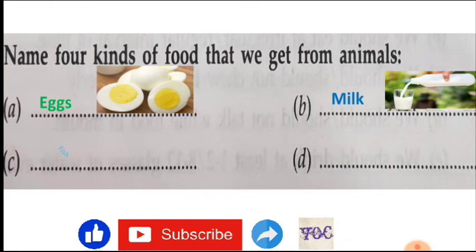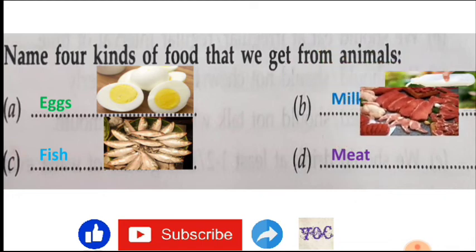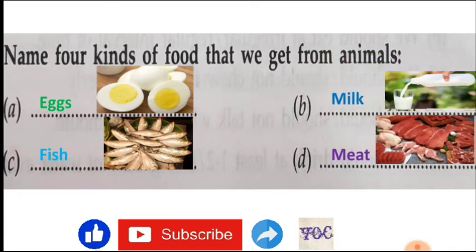Next you can see that we get from animals, yes, fish. Fish is also a very important source for good health. Next, last one may be meat. Different types of meats are there, so you can see, write meat there.